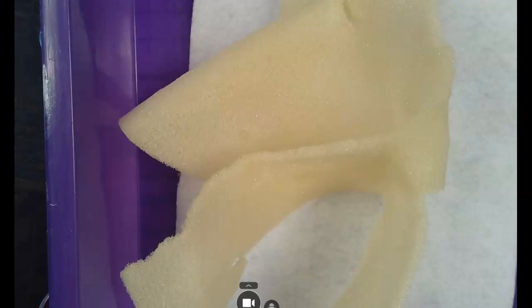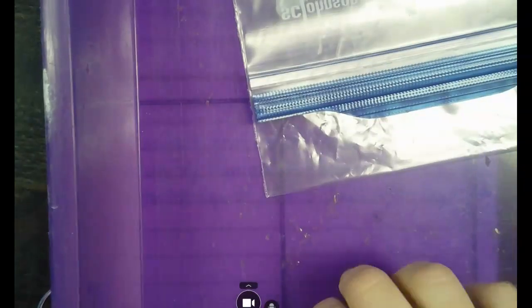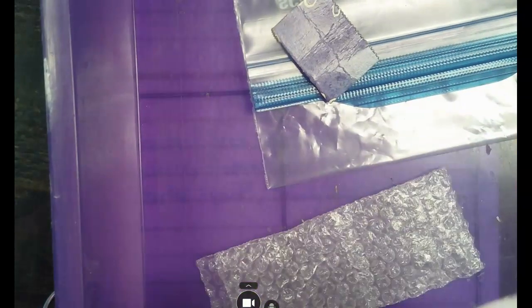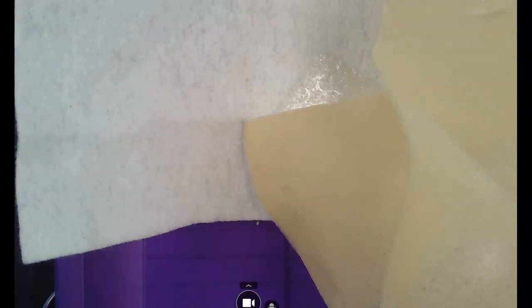Welcome back to science. This is tub number five we've discovered. The choices in here are a Ziploc bag, a piece of cardboard box, felt, bubble wrap, and styrofoam or a squishy type of thing.